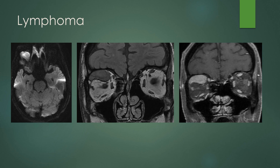Lymphoma can occur along the extraocular muscles. You'd like to see restricted diffusion, as lymphoma tends to show. On FLAIR it can be isointense to brain, and you'd like to see nice homogeneous enhancement. So a homogeneously enhancing mass in the extraconal compartment of the orbit — don't forget lymphoma likes to live there — and look at the DWI to give you a hint.